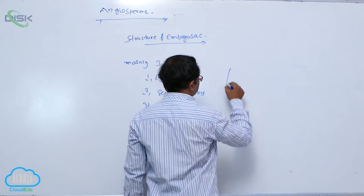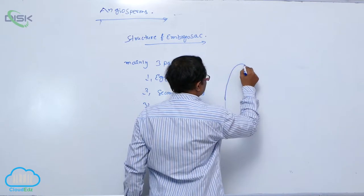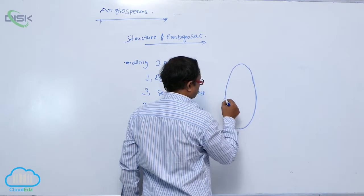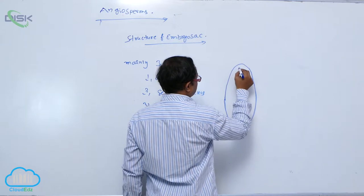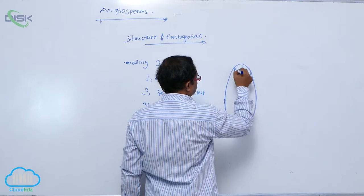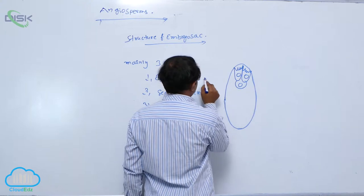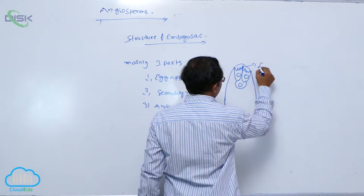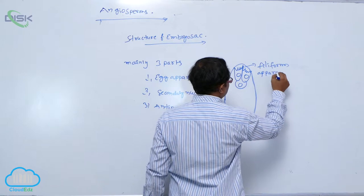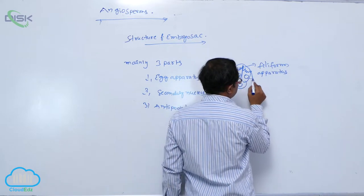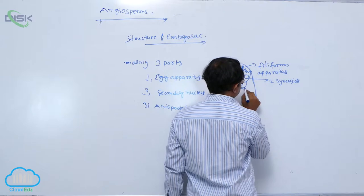In the structure of embryo sac, at the micropyle region, these are the synergid cells. This is known as the egg cell. That is known as egg apparatus. It is known as the filiform apparatus. They are known as the synergid cells. It is known as the egg cell.